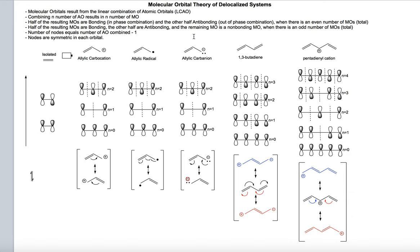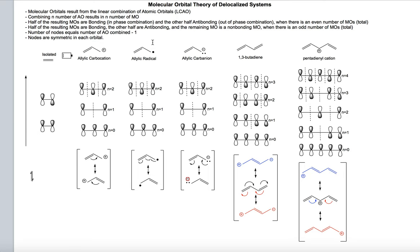If the number of resulting molecular orbitals is an odd number, then half will be bonding, the other half anti-bonding, and the remaining molecular orbital is called a non-bonding molecular orbital. Another important thing when building molecular orbital diagrams is knowing the number of nodes. The top orbital will have a number of nodes equal to the number of combining atomic orbitals minus one. Nodes are always symmetric in each molecular orbital.